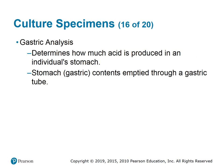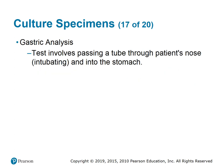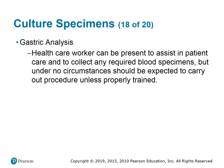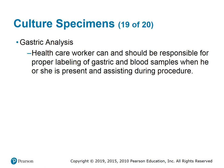Gastric analysis determines how much acid is produced in an individual's stomach. Stomach or gastric contents are emptied through a gastric tube; the test involves passing a tube through the patient's nose and into the stomach. This can be done as an outpatient in the office, a facility, or hospital depending on severity. The healthcare worker can assist in patient care and collect required blood specimens but should not carry out the procedure unless properly trained, and is responsible for proper labeling of gastric and blood samples.